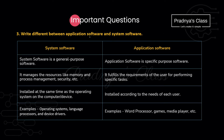Here is another important question — we need to write the difference between application software and system software. System softwares are responsible for the smooth functioning of the computer, so it is a general purpose software, whereas application softwares are specific purpose softwares. System softwares are responsible for managing different resources like memory and process management.